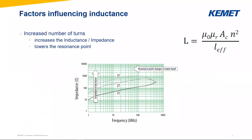Now let's go into the number of turns — this is the N in the formula. If you want to increase the turns, it's not just increasing the inductance; you also change the effective frequency range. By increasing the number of turns, the resonant point changes to a lower band, which means you might have a situation with your frequency range. Your impedance or inductance will increase, but your resonance point will decrease. It's not easy to make hundreds and thousands of turns on a coil, because you also have an impact on your resonant point or frequency range. The frequency will change by changing the number of turns, or maybe also by changing the core material permeability.